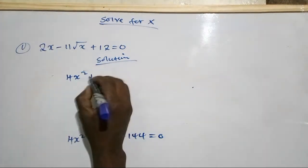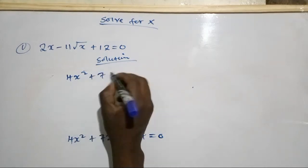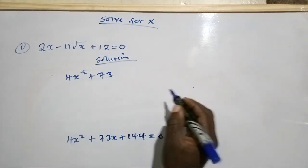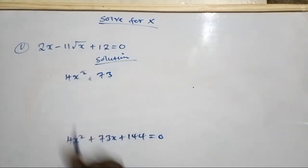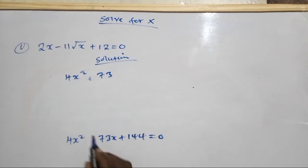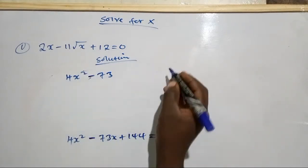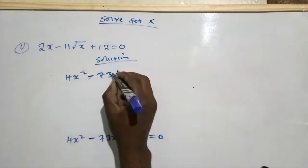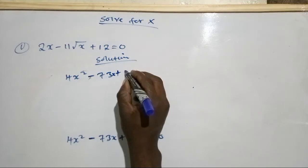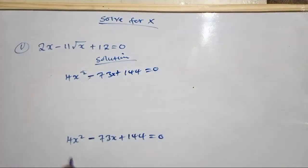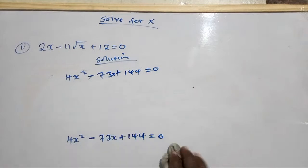Writing the quadratic equation clearly: it is minus 73 because we are subtracting the bigger number from the smaller number here. So we have 4x squared minus 73x plus 144, which equals zero. This is the quadratic equation we have.